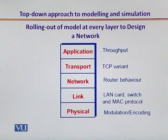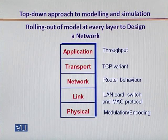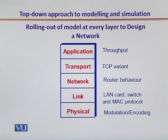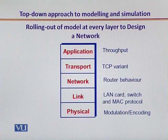This is the TCP/IP layered architecture, in which you can see that the modeling at each layer is quite different from the other layers. For example, at the application layer we are interested in determining the end-to-end throughput, but this requires that we must understand which TCP variant with what TCP settings we are using at the transport layer. On the network layer, the behavior of the routing protocol and the router itself is going to significantly impact the application layer throughput. The LAN card, the medium access control sublayer, and access control mechanisms are also going to play a significant role.